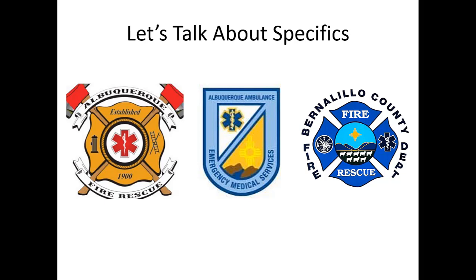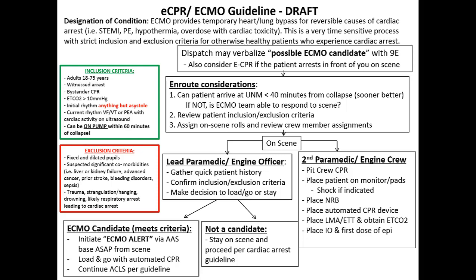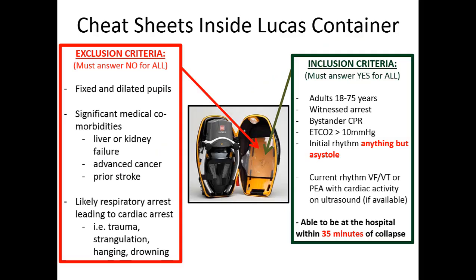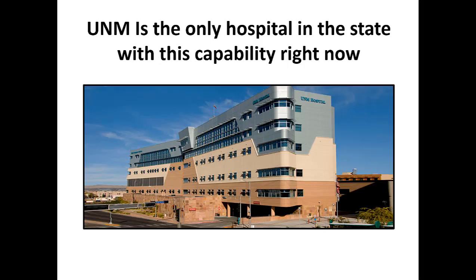Here's a peek at what the guideline will look like when released in July, once all crews in the system have been trained to recognize these patients. For now, after receiving this training, we're giving you a quick cheat sheet of inclusion and exclusion criteria included in the Lucas device as a reference. If you recognize a patient in the field who meets all the inclusion criteria and has none of the exclusion criteria, you have that checklist right there. If it's before July, we're asking that you call the 78 to confirm so they can start getting things rolling on the hospital side. Right now UNM is the only hospital doing this — it's the only one in the state — so that's the only destination.